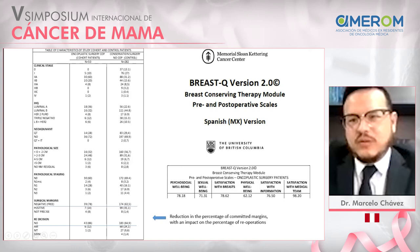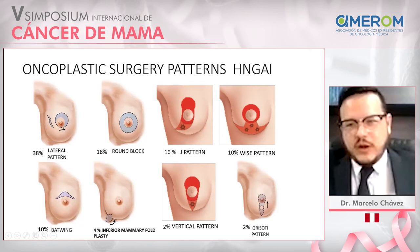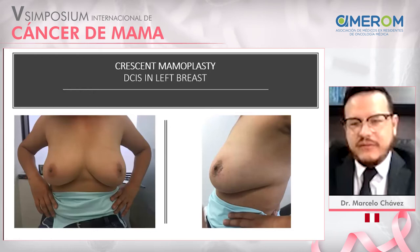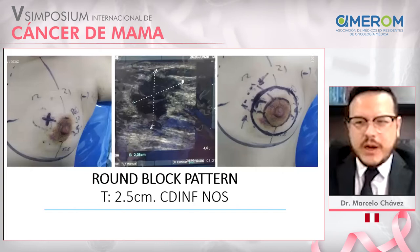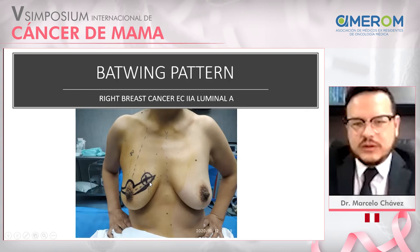Let's see the cases we are doing now in oncoplastic surgery at the National Hospital. This is a patient with DCIS in the left breast — we performed an acrylic mammoplasty. After radiotherapy, she has no deformity or asymmetry. This next patient had a periolar tumor for which we performed a round block technique — the postoperative result shows a good outcome. This patient was challenging — she had a tumor in the superior quadrant of the breast, so we performed a bat-wing approach with good results.